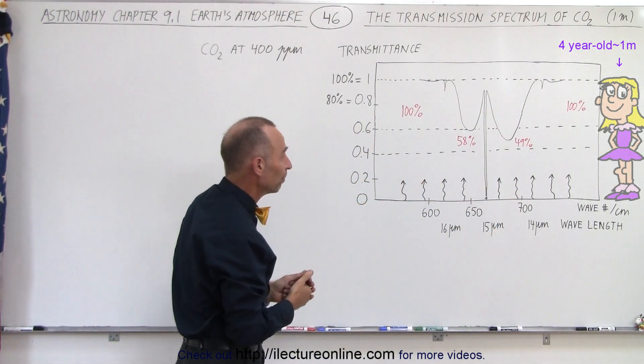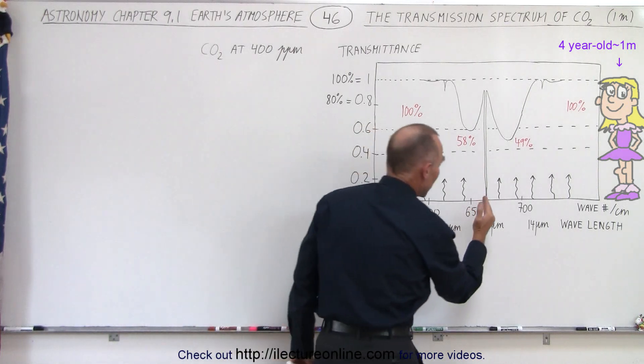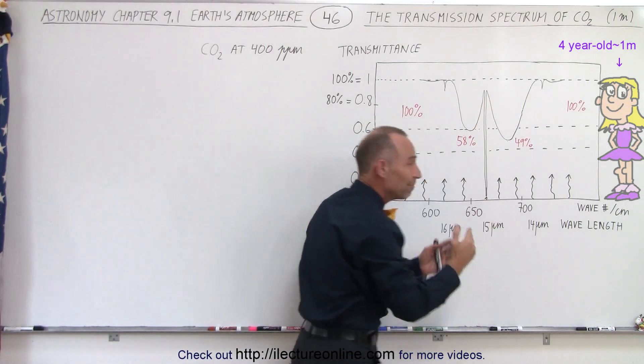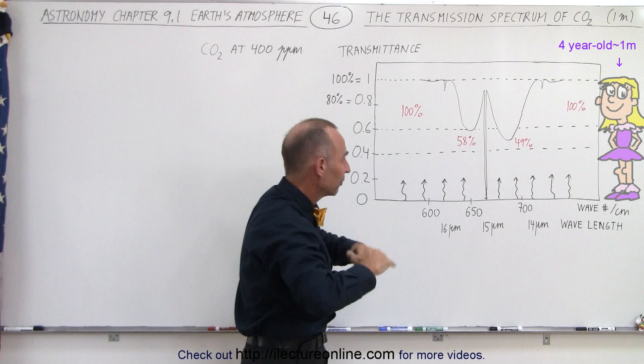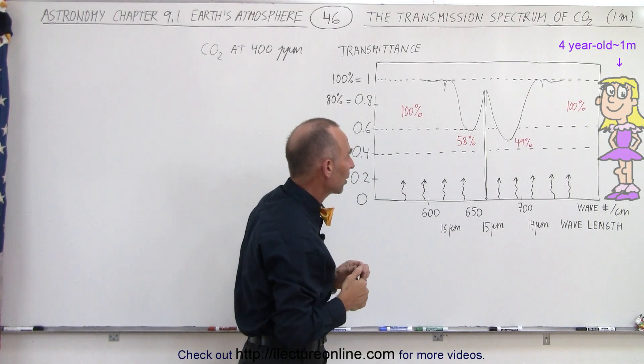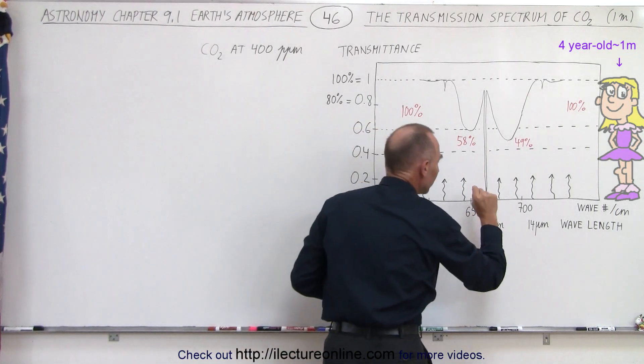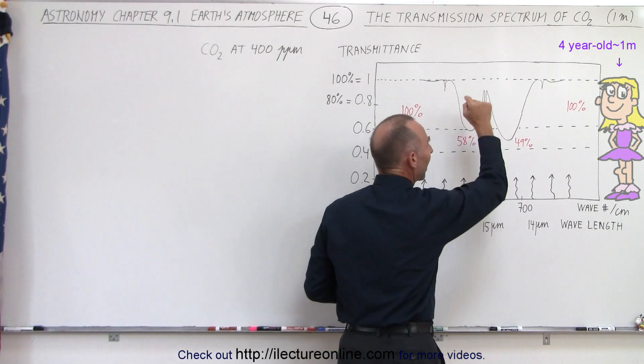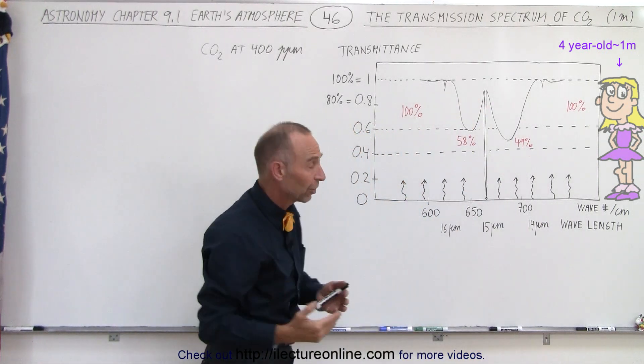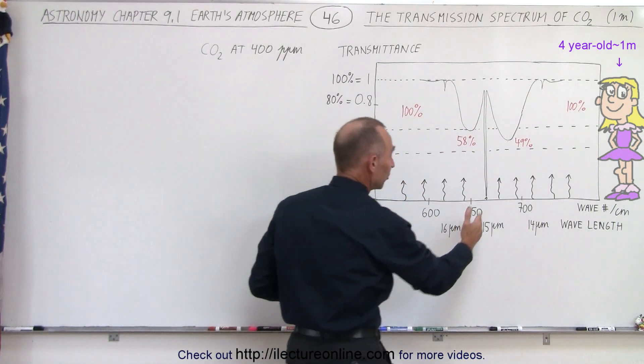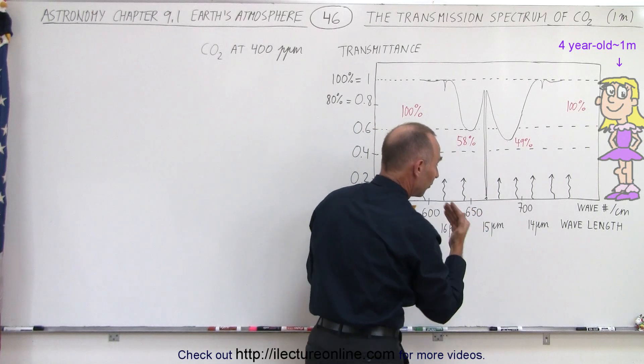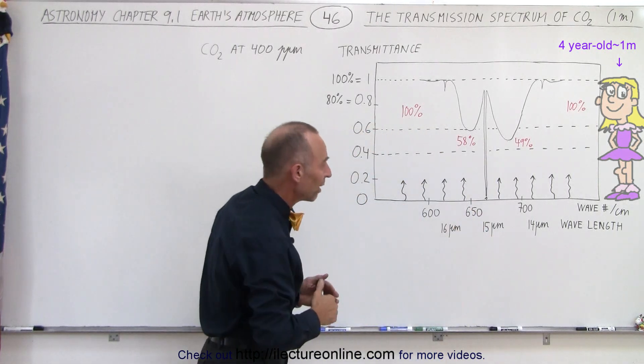That's essentially what we're looking for. Notice, at 15 micrometers right here, we have the bending mode, the quantum mechanic bending mode of the carbon dioxide molecule. Almost none of the radiation reaches a height of one meter before it's absorbed because carbon dioxide is very good at absorbing that particular frequency of that particular wave number.